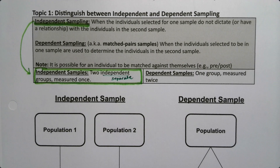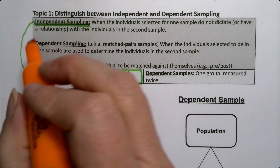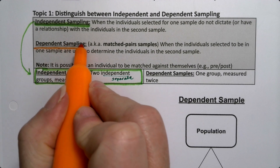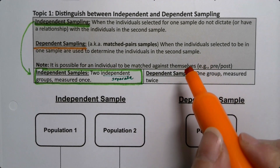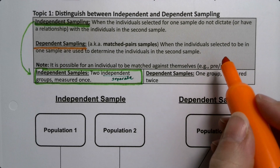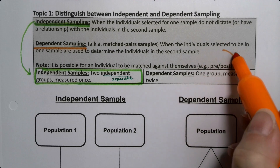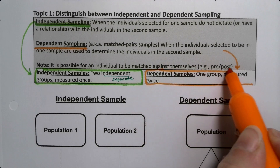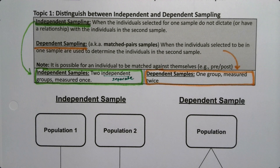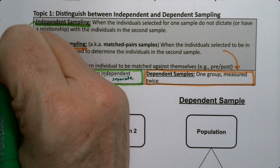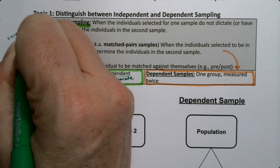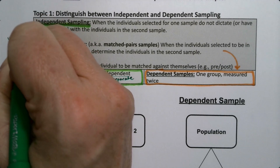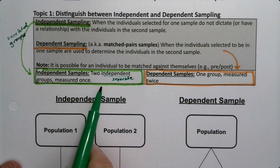Now dependent sampling is a different story, because dependent sampling is when the two groups are related — so much so that we call them one group. It's when you have one group measured twice. It could be one group in terms of being a single group of individuals, or it could be one group in terms of they're not separate — they have a relationship. So independent means unrelated groups that are separate.